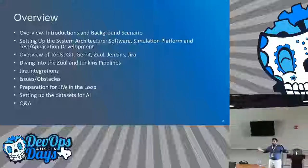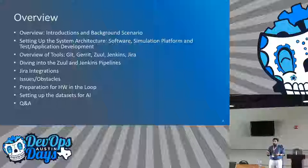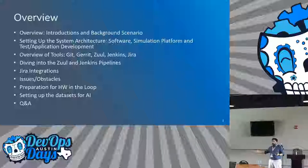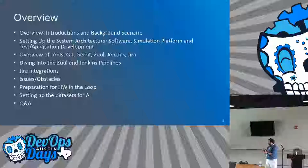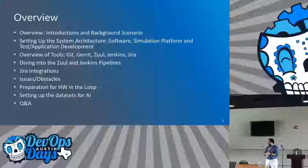Unlike having a stable platform where you could test everything and know what is happening in your code, you have a lot more variables. Logging sometimes works, sometimes doesn't, because your simulator itself will crash at times. We're going to talk about how we set up the system architecture problem — the software, the simulation platform, and the test and application development.